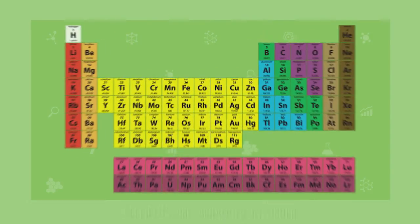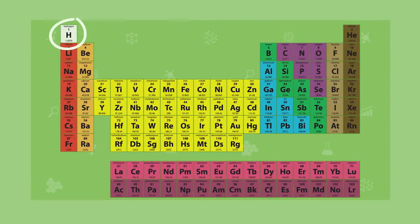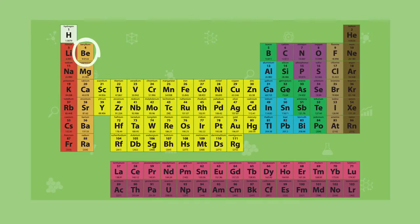If an atom has one proton, it's hydrogen. If it has two protons, it's helium. If it has three, it's lithium. Four, it's beryllium, and so on. So that's why the boxes representing elements are arranged in the order that they are.